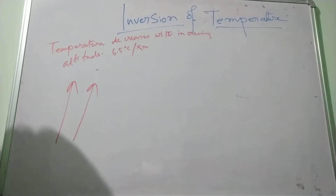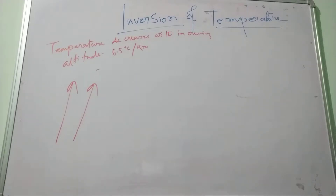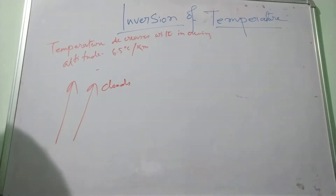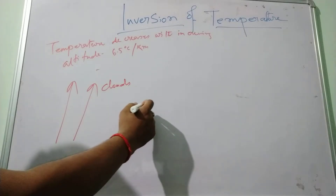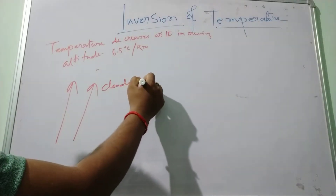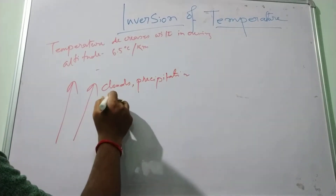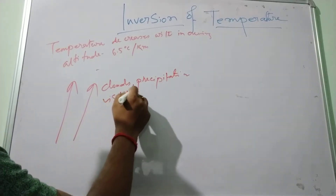This is generally the reverse phenomenon in our atmosphere. Under these special circumstances, temperature inversion plays an important role in the formation of clouds, precipitation, visibility, etc.